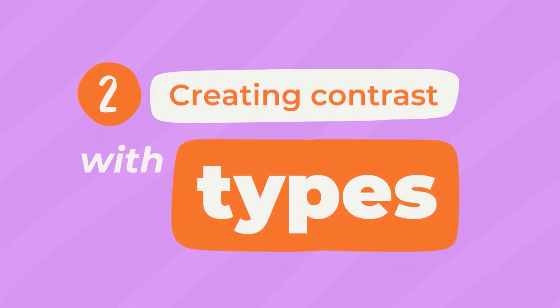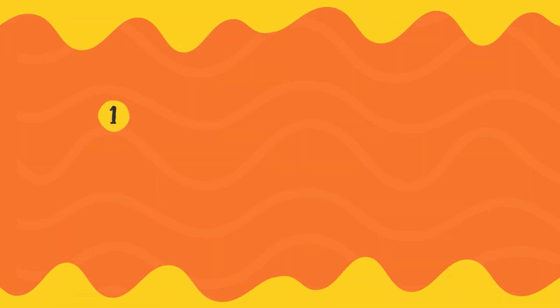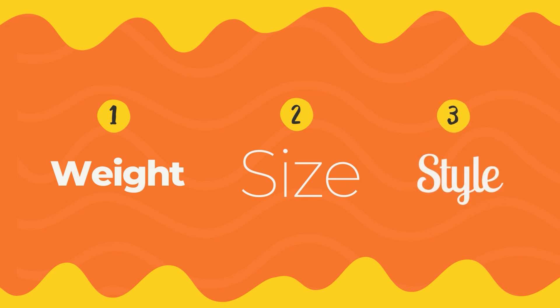Now let's move on and see how to create contrast — this time not with colors, but with typography or type. When trying to create contrast with fonts or typography, we usually have three tools to work with: we can play around with weight, we can play around with size, or we can play around with the style of fonts we are using. Let's go back to Diana's templates and see some good examples of how to create contrast with fonts.